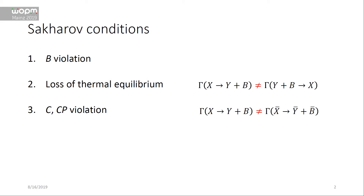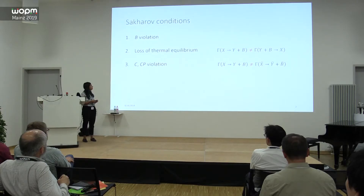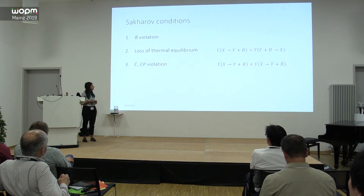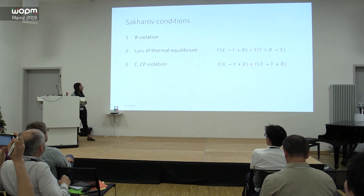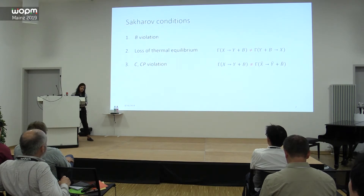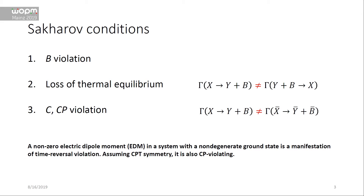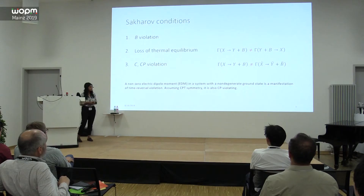The last Sakharov condition is C and CP violation. C is charge conjugation — a symmetry between particles and antiparticles. If you conserve parity, the charge conjugate process restores baryon asymmetry, so what you really need is CP violation. Currently in the Standard Model there is not enough CP violation to generate a baryon asymmetry, which is why we care about beyond-Standard-Model sources. Electric dipole moments are a great place to look, because a measured EDM is time-reversal violating and therefore also CP violating.